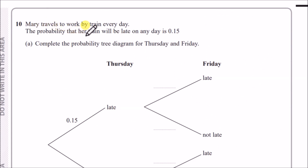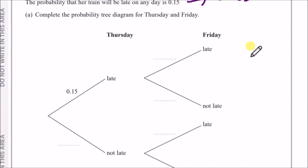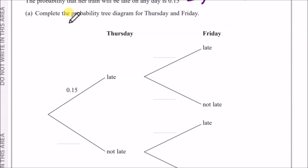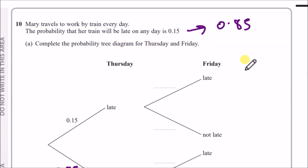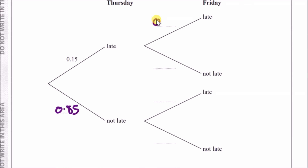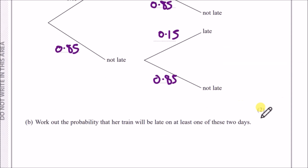Mary travels to work by train every day. The probability her train will be late on any day is 0.15, so the probability it's not late is 0.85. All probabilities must add up to 1. Complete the probability tree for Thursday and Friday. Since there are no other conditions, it's always the same: 0.15 to be late and 0.85 to not be late for both days.